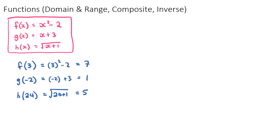Next we move on to domain and range. These two words are very important for functions and relations. Domain is associated with the possible x values, and range is associated with the possible y values. The domain is the input and the range is the output variable.